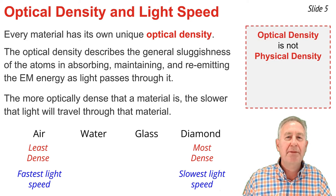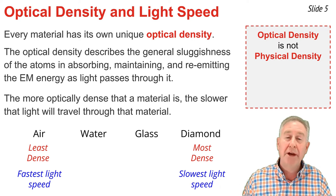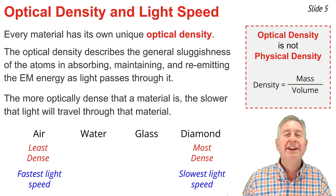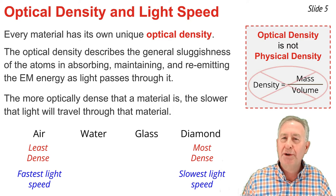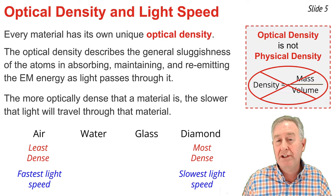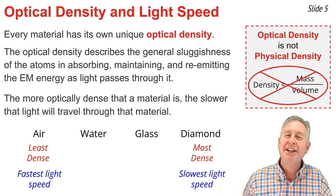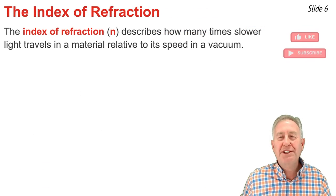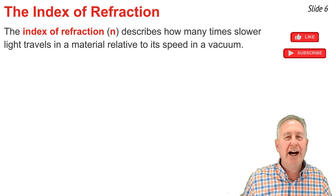Optical density is not the same thing as physical density. You may have learned about physical density as the mass per volume ratio in another science class. Optical density is not mass per volume. Instead, it simply refers to the general tendency of the atoms of the material to get in the way of light as it passes through it.